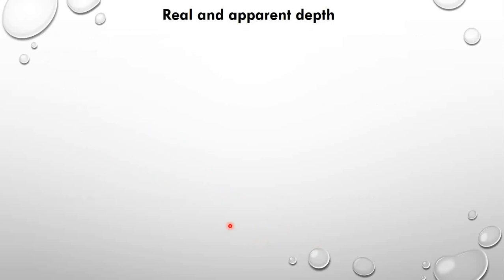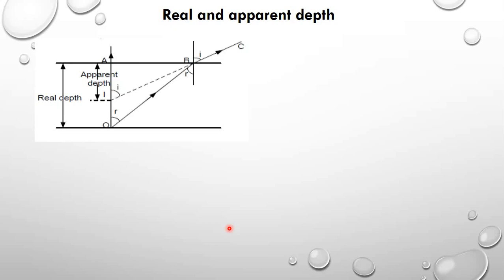Let us look at real and apparent depth. We have a ray OB which is refracted at the glass-air surface, and when refracted it appears to be coming from I. So the image will be at I, meaning to an observer at C, the object will seem to be at I. The distance OA is the real depth, and the distance IA is the apparent depth. We apply Snell's law at this point to derive the relation between real depth, apparent depth, and refractive index.